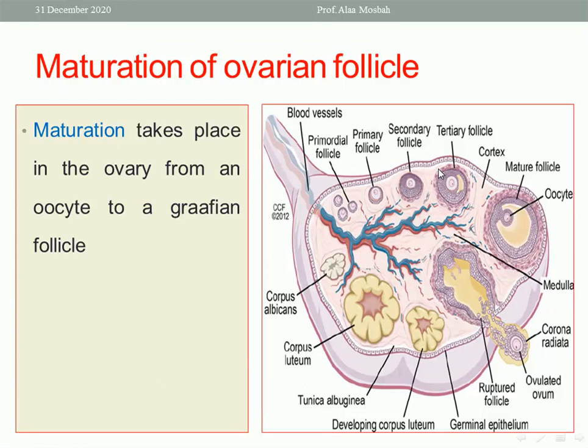This is the cycle of the growing follicle, which occurs in the cortex. The layers of the ovary include the germinal epithelium on the outer surface, then the cortex containing the growing follicle, then the medulla containing the neurovascular tissue.